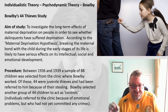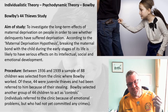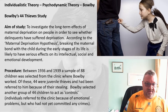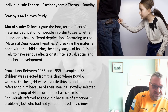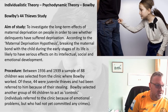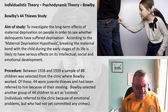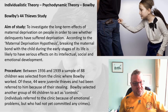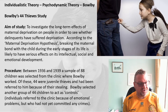Between 1936 and 1939, Bowlby took a sample of 88 children selected from the clinic where he worked. Of the 88, 44 were juvenile thieves who had been referred to Bowlby because of their stealing. Bowlby then selected a control group of another 44 children who had emotional problems but had not committed any crime. So you have one group of 44 thieves and a control group of 44 non-criminals.